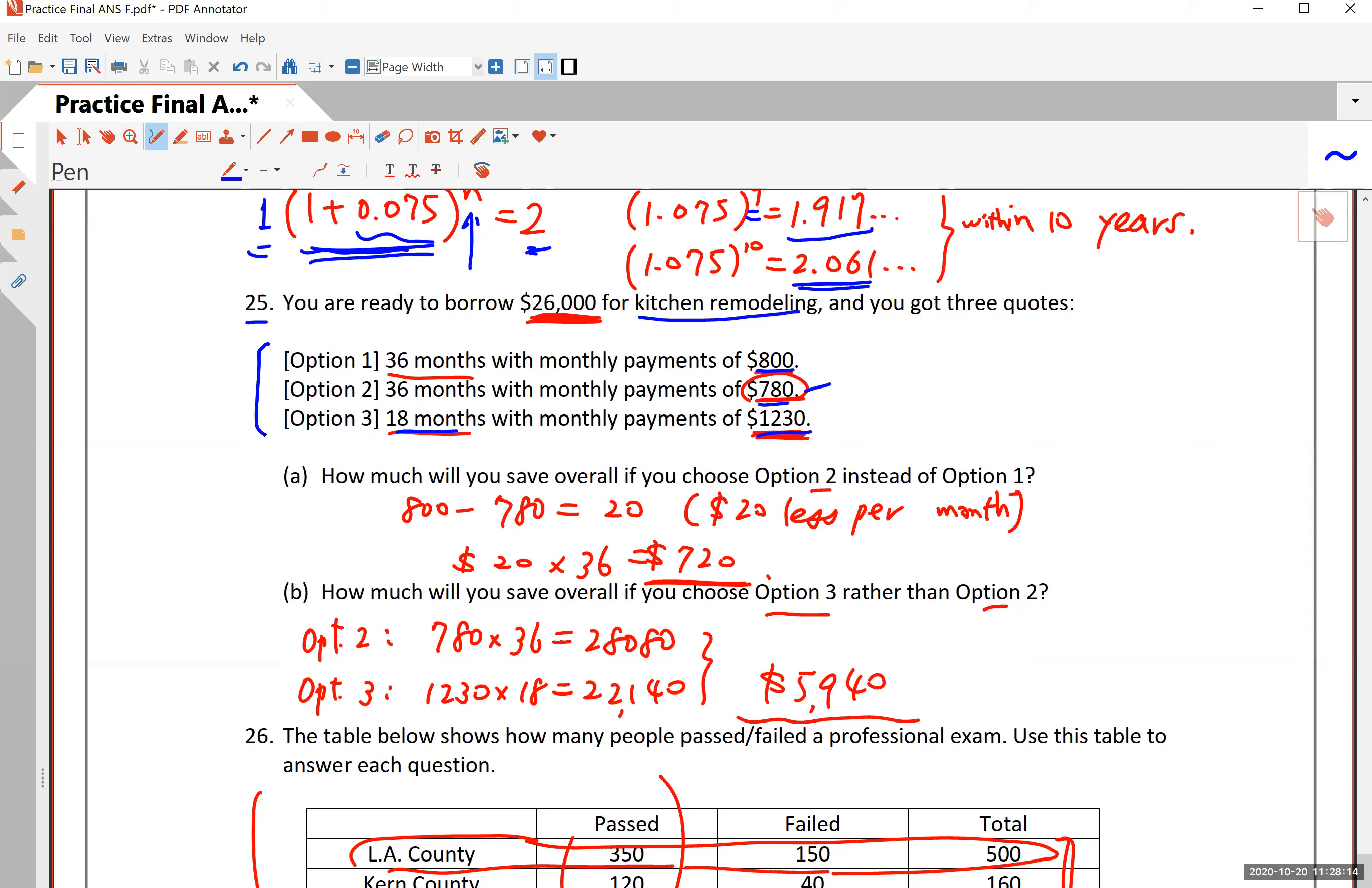Now I'm not asking you to calculate the annual percentage rate. Nor am I asking you to calculate the monthly payment based on a certain percentage. But if you are given scenarios like this, I do want you to answer questions like A and B. A says, how much will you save overall if you choose option two instead of one? Well, that's an easy question. Option two, you save $20 a month for 36 months. So $20 times 36 would be $720 of saving.